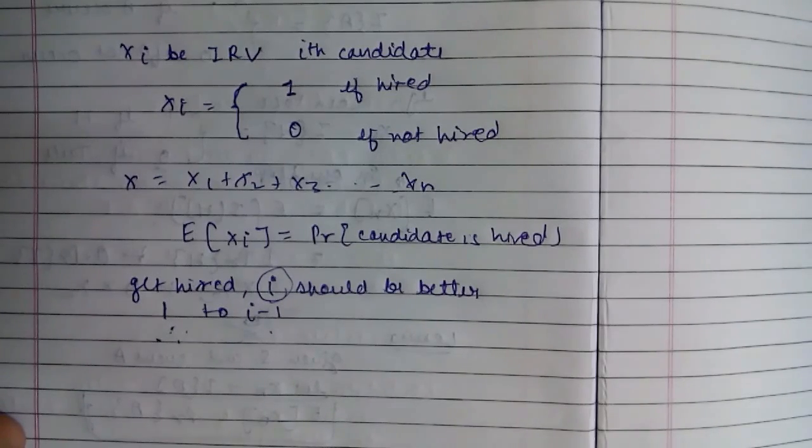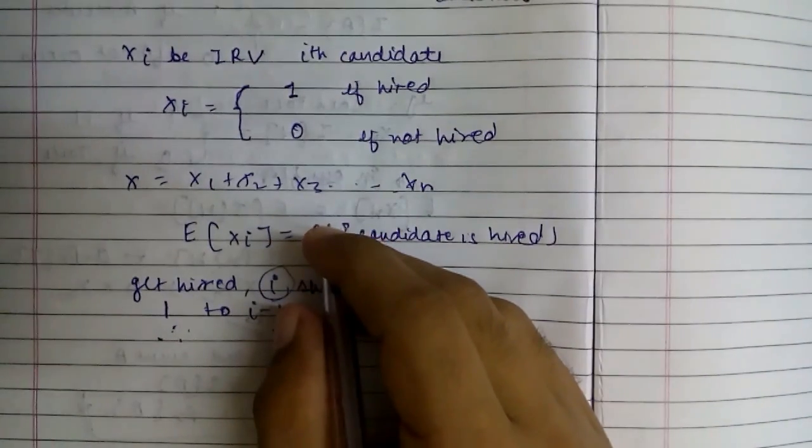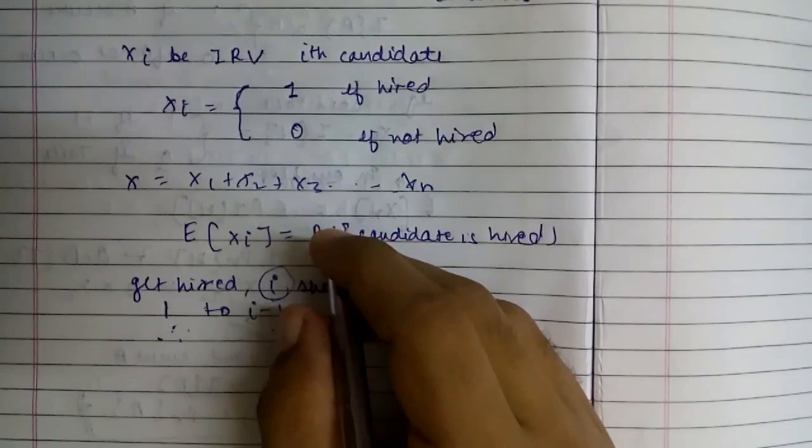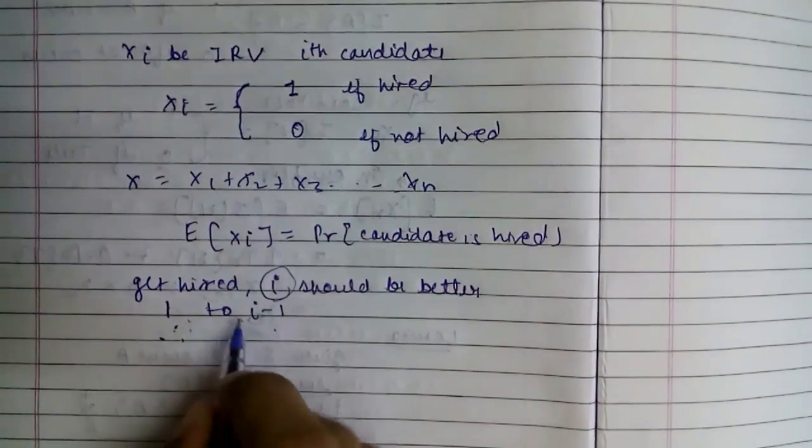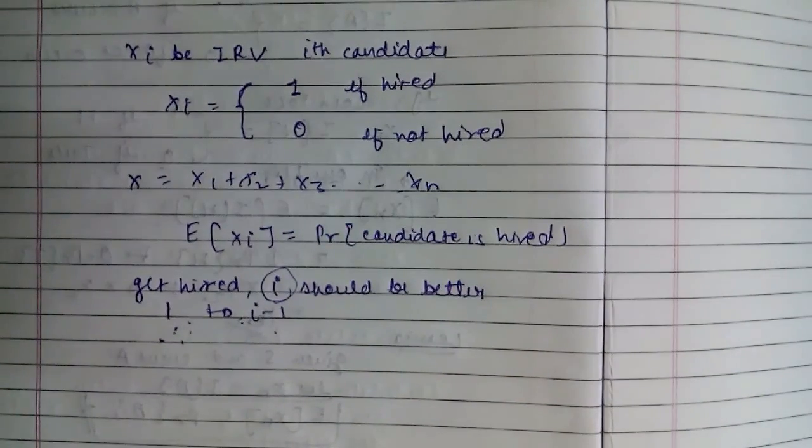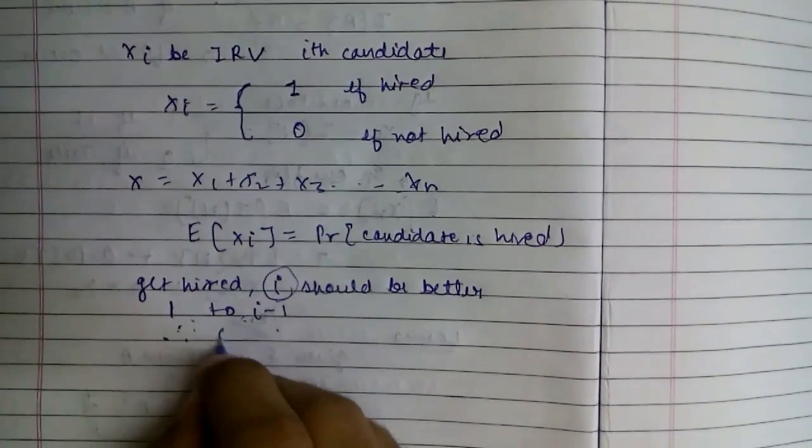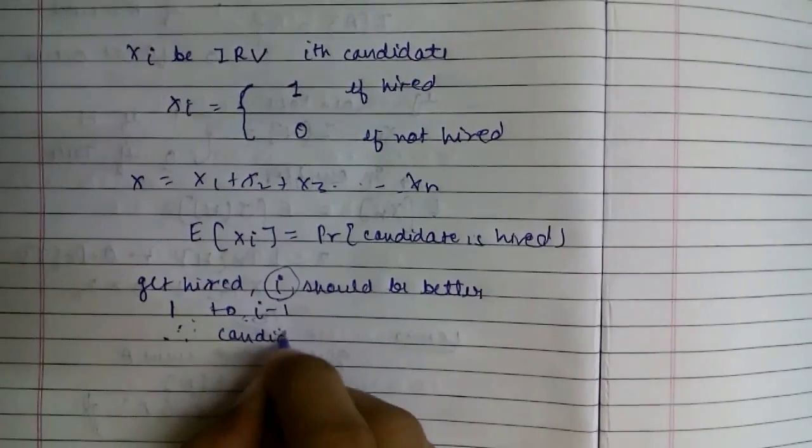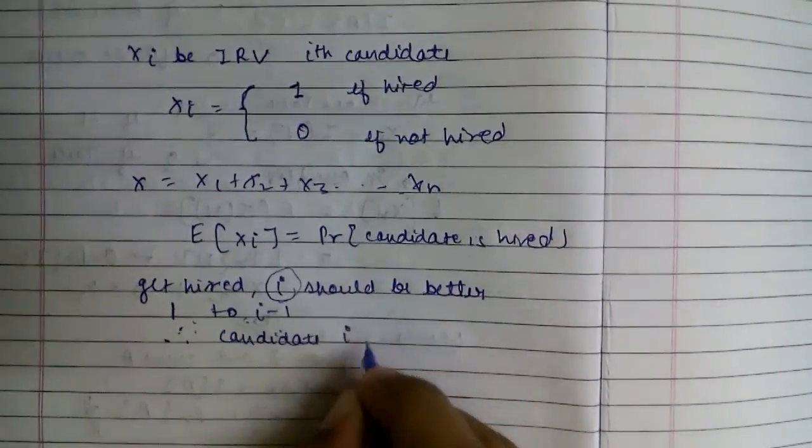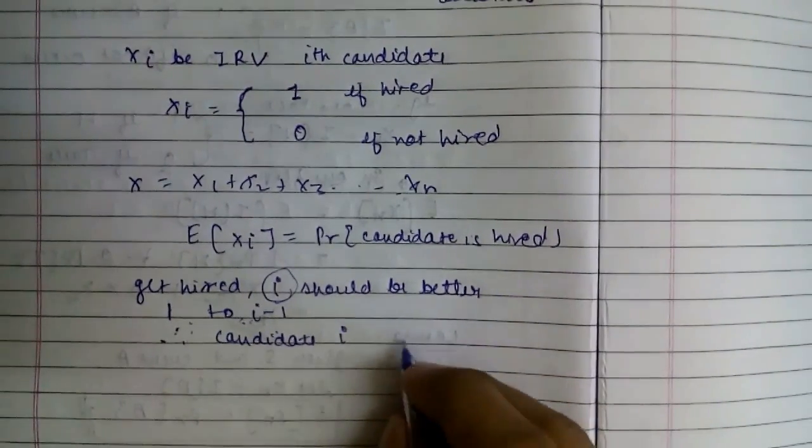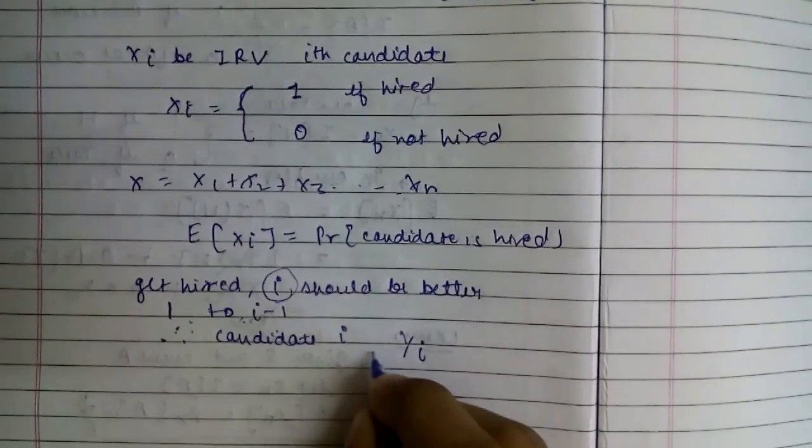The qualification, that is the quality of the candidates, are equally likely. Anyone can be qualified. So the probability that candidate i will get hired is 1 by i.